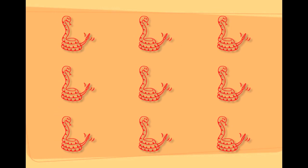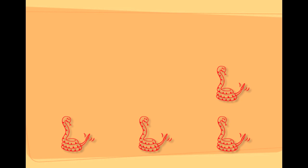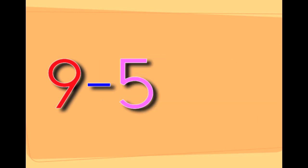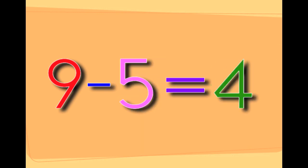There are nine snakes. Taking five snakes away from the nine snakes leaves you with four snakes. Nine minus five equals four.